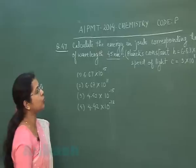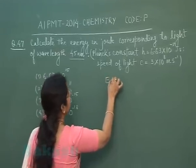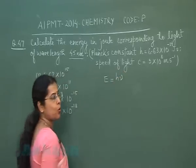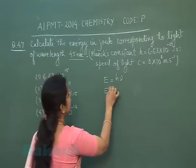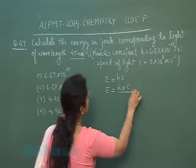Here we have to calculate the energy of a photon. As we know, energy of a photon is equal to hν, or it can be written as E = hc/λ.